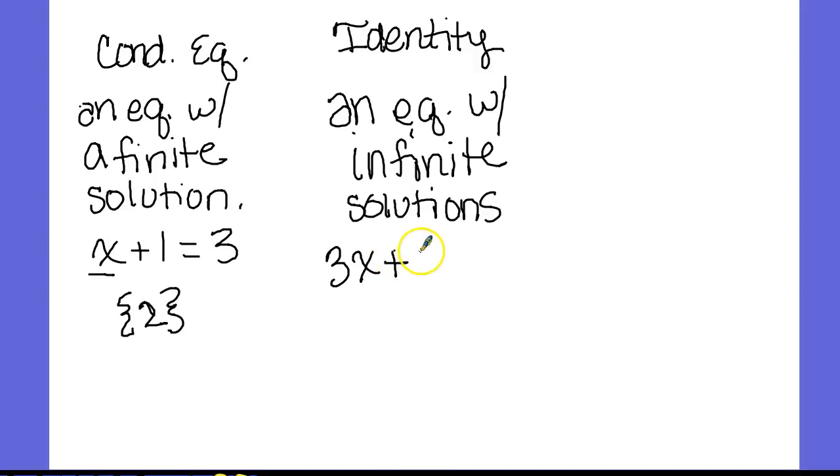This is an identity solution because can you see that they're identical on both sides? I want you to just pick any value you want for x, keep it little. One. Okay. So 3 times 1 is 3, plus 9 is 12. I'm going to put a 1 over here. 1 plus 3 is 4, and 4 times 3 is 12. Pick another one. Zero. 3 times 0 is 0, plus 9 is 9. 0 plus 3 is 3, and 3 times 3 is 9.